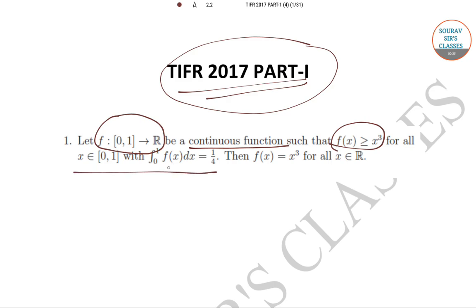There is one more condition: ∫₀¹ f(x)dx = 1/4. Then it is stated that f(x) = x³ for all x in R. You have to check whether this statement is true or false.